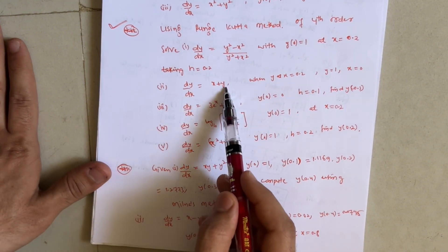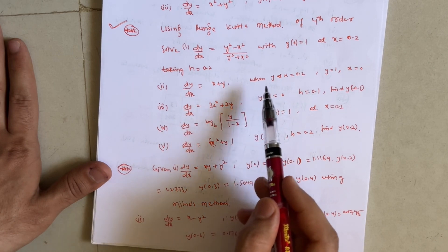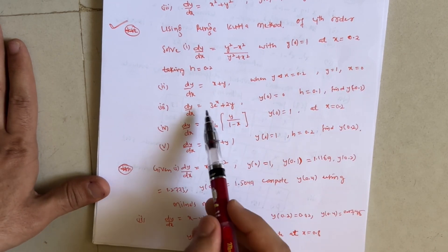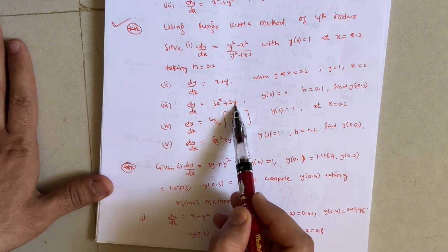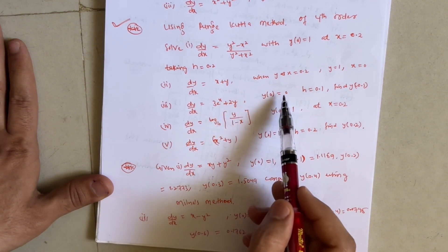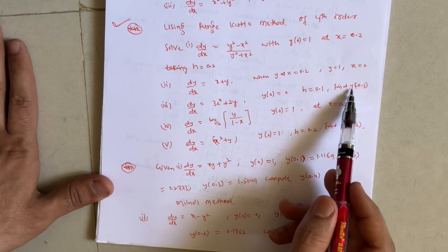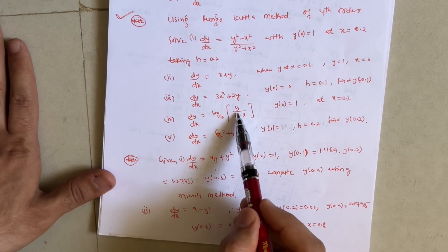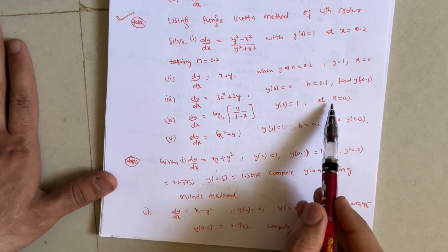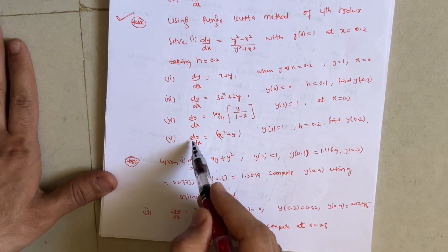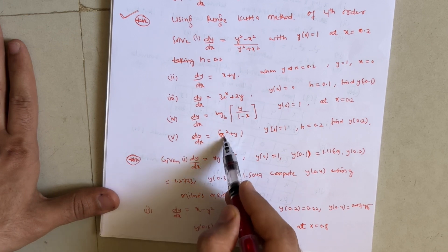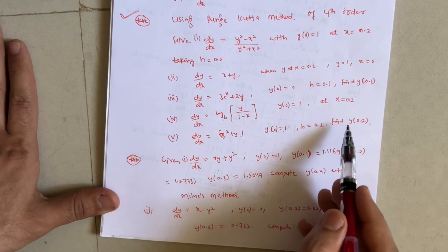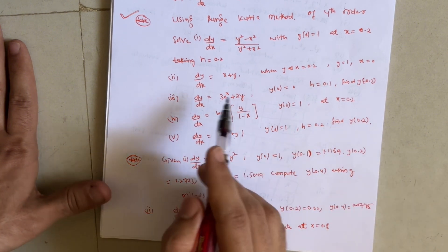Additional important Runge-Kutta problems: dy/dx = x + y, find y at x = 0.2 with y(0) = 1. Also dy/dx = 3eˣ + 2y, y(0) = 0, step size 0.1, find y at 0.1. Next, dy/dx = log₁₀(y)/(1 − x), y(0) = 1, at x = 0.2. Lastly, dy/dx = x² + y, y(0) = 1, find y at x = 0.2.